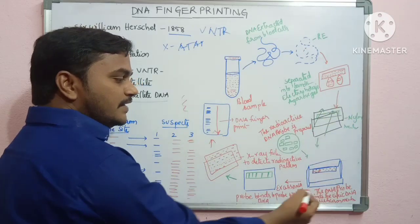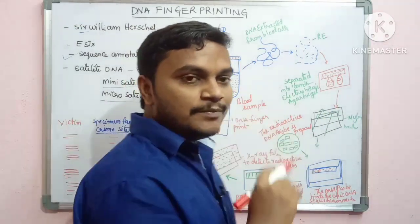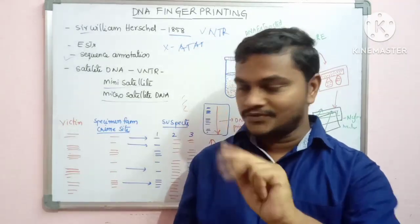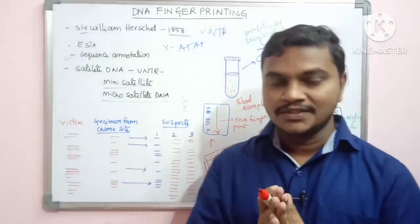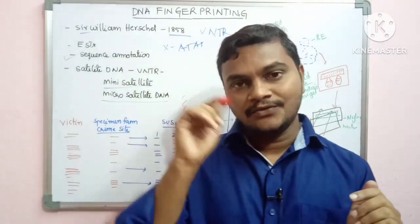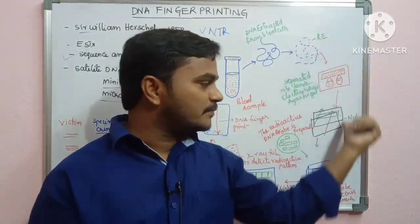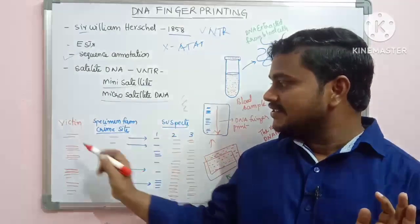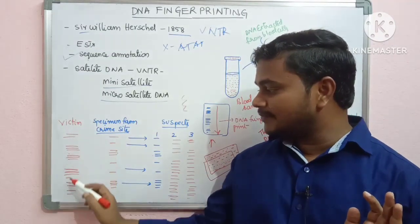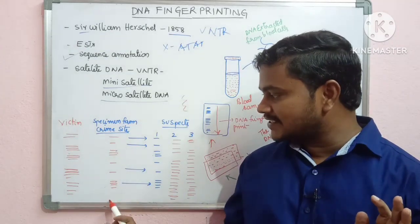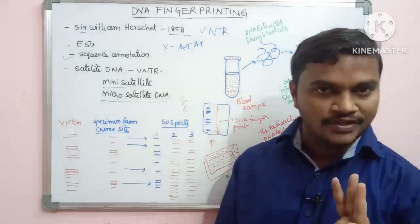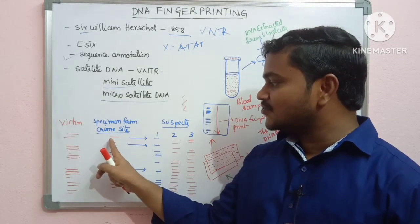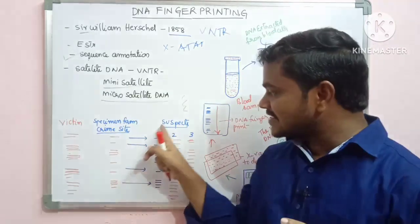Let's take a murder case example. There is a crime site specimen. The suspects are Suspect 1, 2, and 3. We perform DNA fingerprinting on the victim, the crime site specimen, and all three suspects. The victim's DNA fingerprinting bands are compared with the specimen from the crime site and each suspect. Suspect 1's DNA fingerprinting matches the crime site specimen.